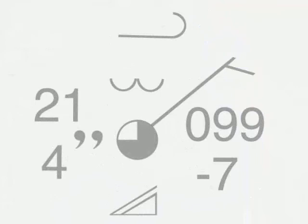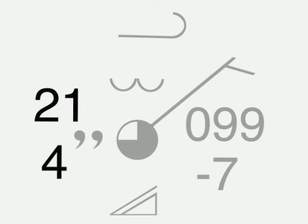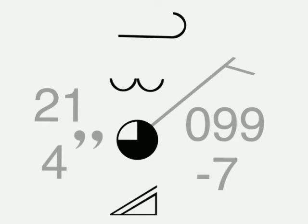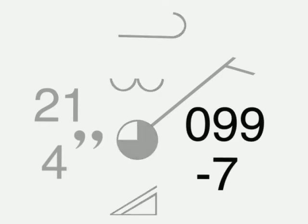By convention, each weather observation station is represented by a circle. Around the circle, symbols indicate the temperature, the type of precipitation, the wind strength, the type of cloud, and the atmospheric pressure that have been measured at the station.